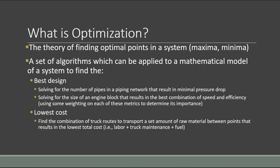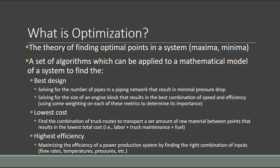You might try to find the lowest cost in a system. In supply chain and logistical planning for transportation, you might want to find the combination of truck routes to transport raw material from point A to point B at the lowest total cost — a combination of labor, truck maintenance, fuel, and other costs. You might also use optimization to find the highest efficiency in a power production system by finding the right combinations of flows, temperatures, and pressures.